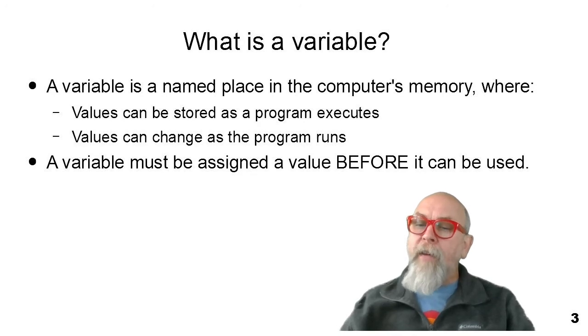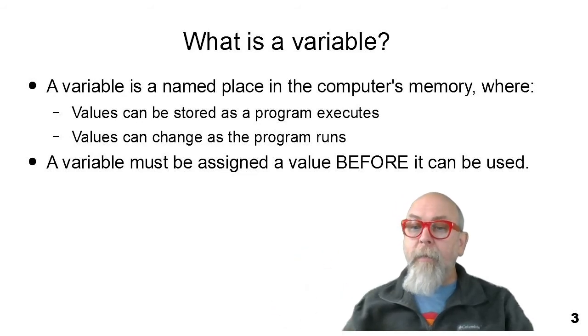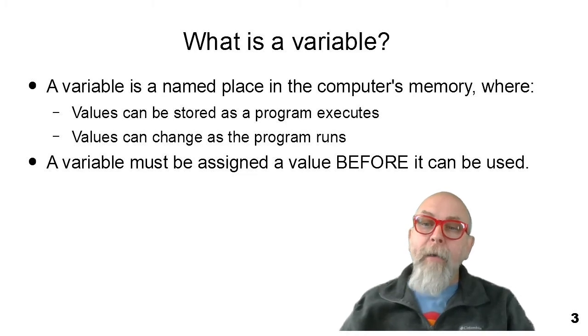Once the program is finished running, though, the computer takes those spots in the computer's memory, erases them, and returns them back to the list of free memory in your computer. So variables are very short-term temporary storage locations used as your program executes. One thing about a variable is a variable must be assigned a value before you try to retrieve a value from the variable, or you'll receive an error. We may see that in some of the examples coming up.